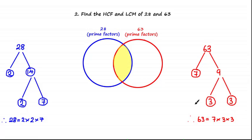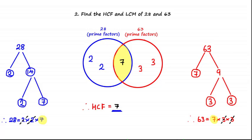Shading in the region where both numbers share the same prime factors, we can see they both share a 7, so we write that in the intersection. They share no other prime factors. Completing the remaining Venn diagram, there are a pair of 2s that are prime factors of 28 and not 63, and a pair of 3s which are prime factors of 63 but not 28. As 7 is the only number in the intersection, the highest common factor of 28 and 63 is 7. The lowest common multiple is 2 times 2 times 7 times 3 times 3, which equals 252.